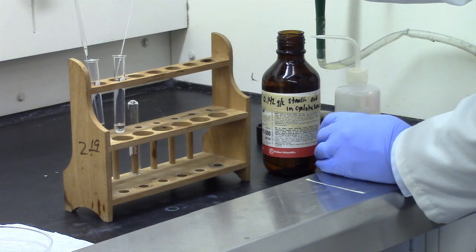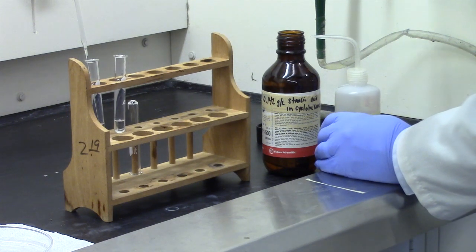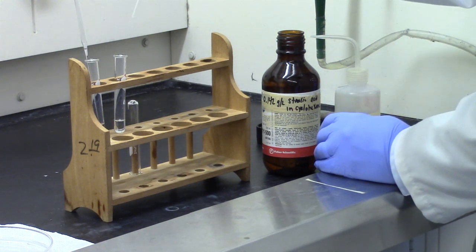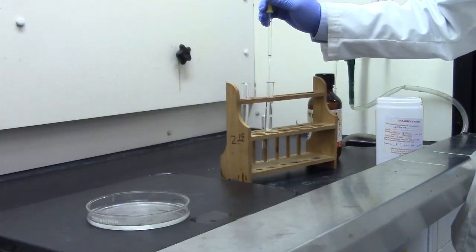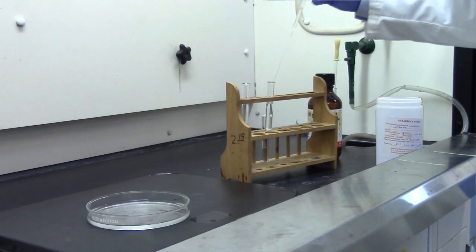In another small test tube, obtain about 7 to 8 mL of 1.42 times 10 to the minus 4 grams per milliliter of stearic acid in cyclohexane. Rinse pipette out with stearic acid solution.